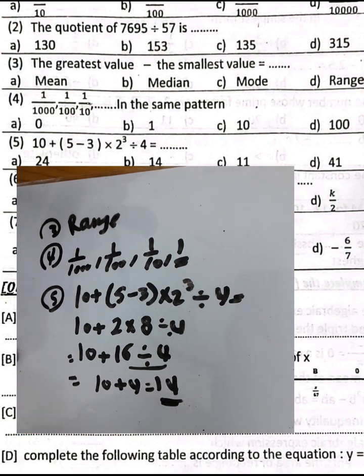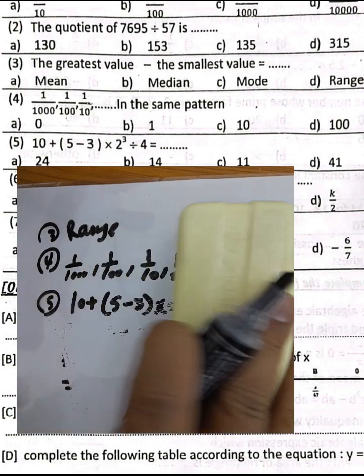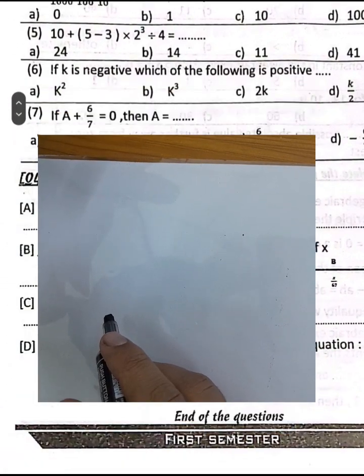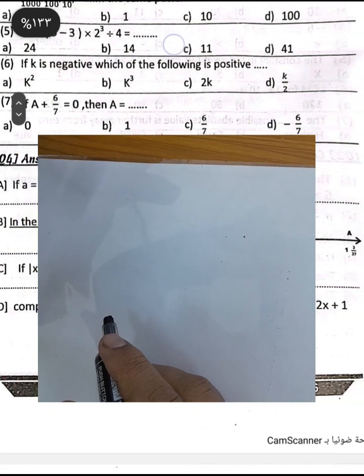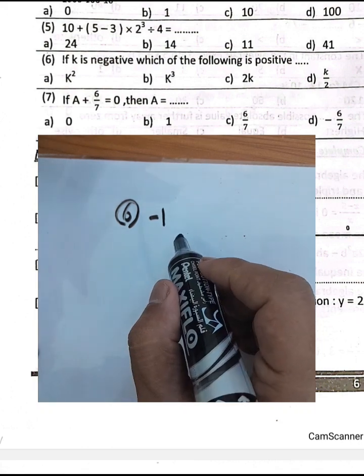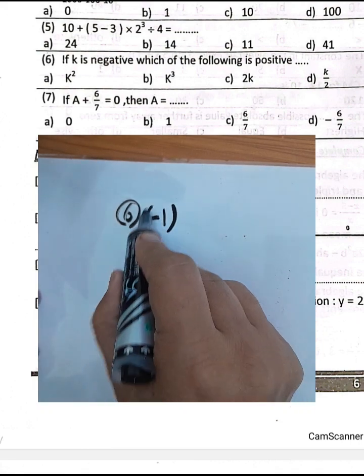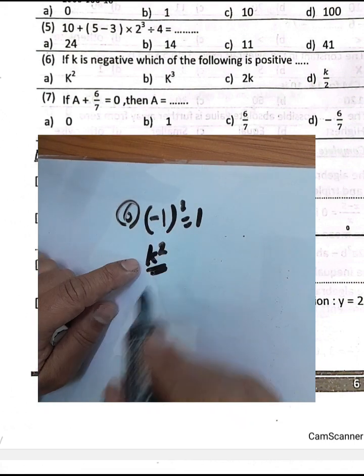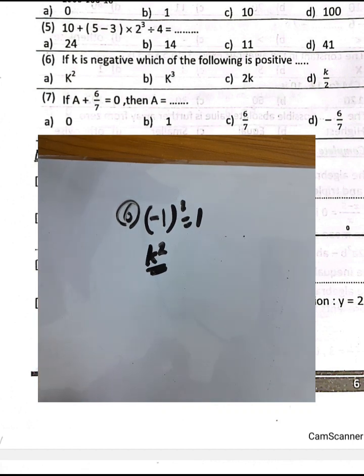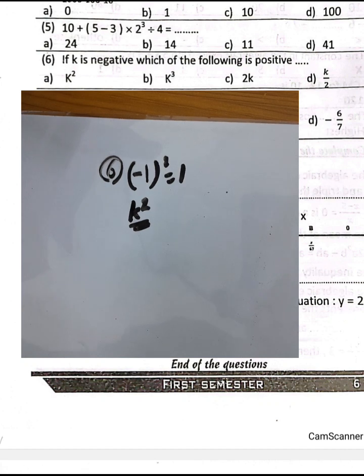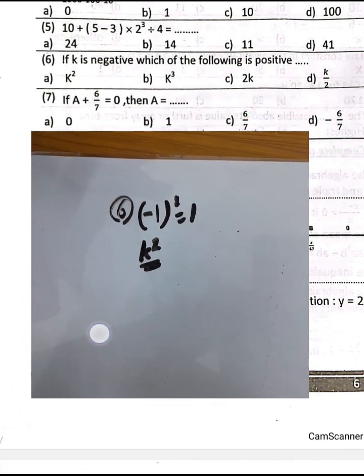Question number 6: If k is a negative number, which of the following is positive? Negative one squared equals 1, so k squared will always be positive even when k is negative. Therefore k squared is the answer.